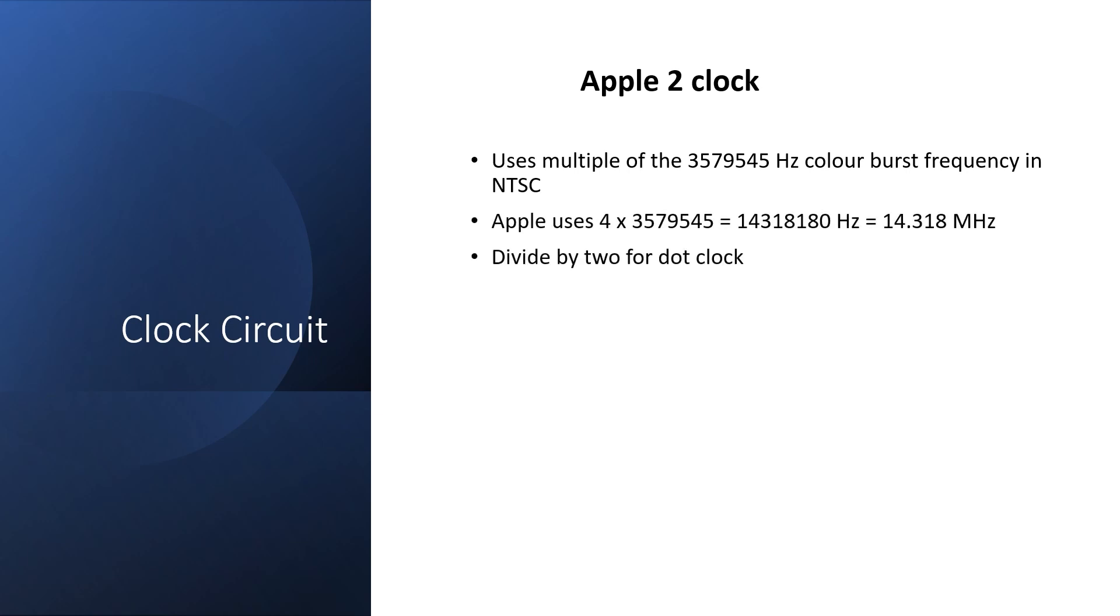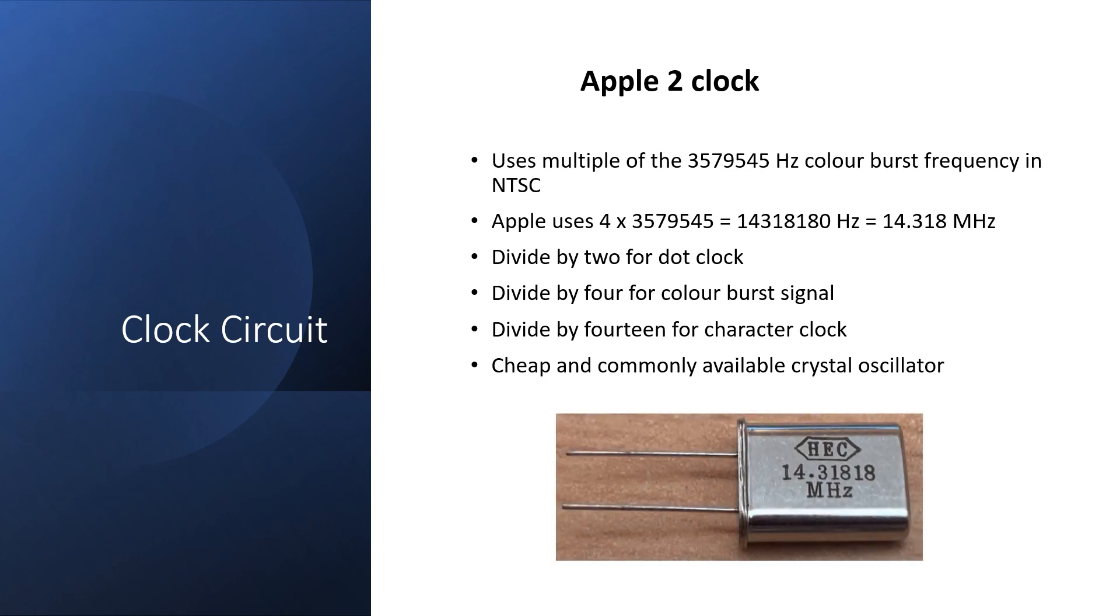Now let's look at the clock circuit in detail. The Apple II uses a 14.318MHz crystal. We can divide it by 2 to get our dot clock, and divide it by 4 to get our color burst reference signal. Finally, we divide it by 14 to get our character clock. These are cheap and commonly available crystals.